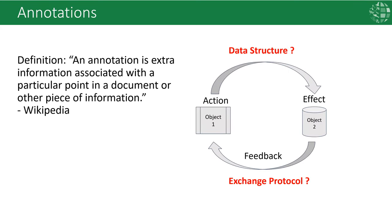So let's start with a definition for annotations. We like the Wikipedia version: an annotation is extra information associated with a particular point in a document or other piece of information. In its simplest form, a feedback loop can represent an annotation where there is an action or an object that has an effect on another, which then promotes the need to provide feedback to the source. But for data, this communication requires a data structure and an exchange protocol.